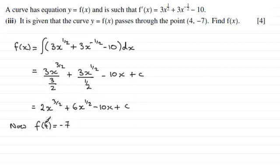So if we substitute 4 into here we therefore have 2 multiplied by 4 to the power 3 over 2 plus 6 multiplied by 4 to the power half minus 10 times 4 plus the c will equal minus 7.